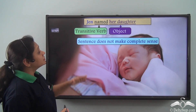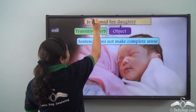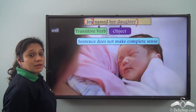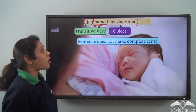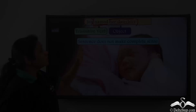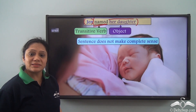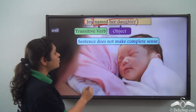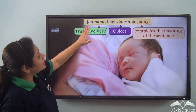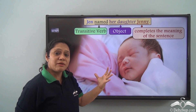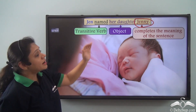Now if I say 'Jen named her daughter,' here 'Jen' is the subject and 'named her daughter' is the predicate. This predicate has the transitive verb 'named,' which takes an object — 'her daughter.' Jen named who? Jen named her daughter. But in spite of having an object, the sentence does not make complete sense. But if we say 'Jen named her daughter Jenny'...